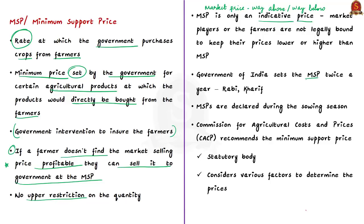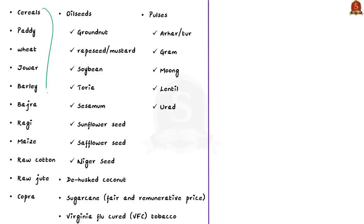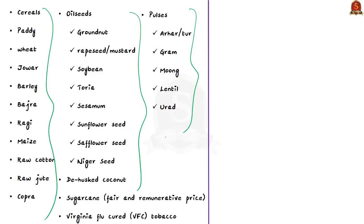The Government of India sets the MSP twice a year — one for Rabi and one for Kharif. MSPs are declared during the sowing season, as this period helps farmers and investors make planned investments into the crop. The Commission for Agricultural Costs and Prices recommends the minimum support price; this is a statutory body that considers various factors to determine the prices. Currently, MSP is fixed for 23 crops, which includes various cereals, pulses, oilseeds and other additional crops.